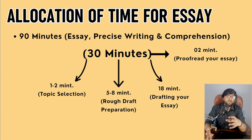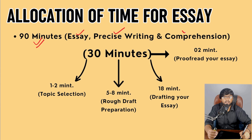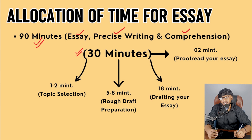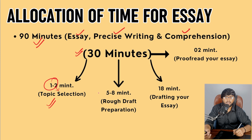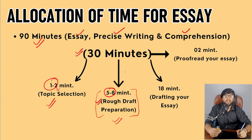Now we will talk about the allocation of time for your essay. Our descriptive English paper is basically 90 minutes. In these 90 minutes we have to write essay writing, precis writing, and comprehension. So if we have to divide the time, we will divide it 30-30-30. For essay writing, we will invest 1-2 minutes in topic selection, then we will prepare our rough draft. You will spend 5-8 minutes on your rough draft and after that you will spend 18 minutes on drafting your final essay.